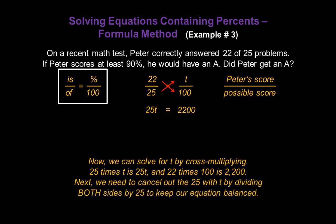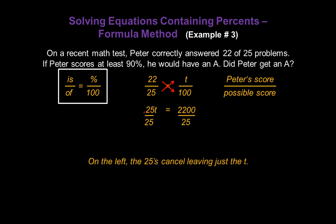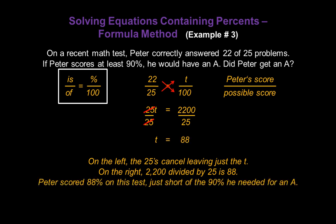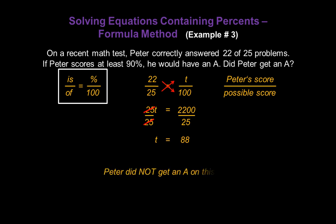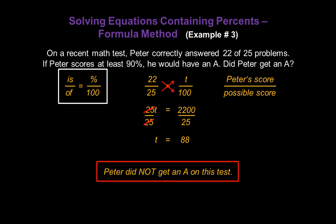Next, we cancel out the 25 with T by dividing both sides by 25 to keep our equation balanced. On the left, the 25s cancel, leaving just T. And on the right, 2200 divided by 25 gives us 88. That means Peter scored 88% on this test, just short of the 90% he needed for an A. So Peter did not get an A on this test.